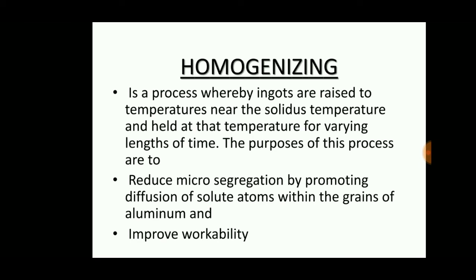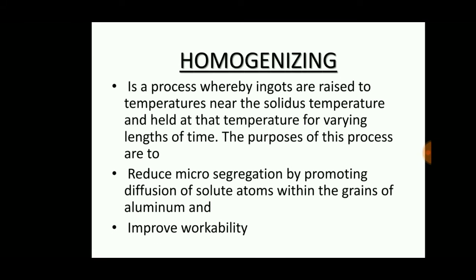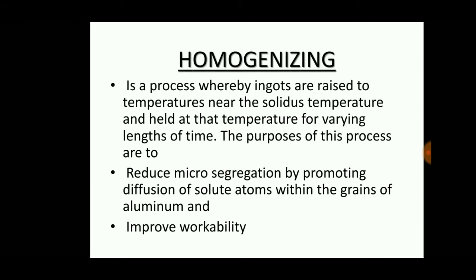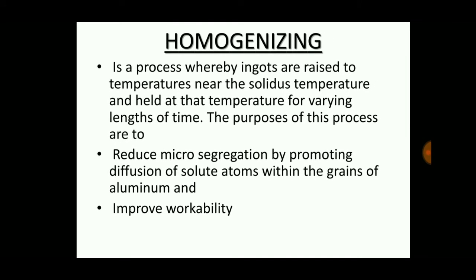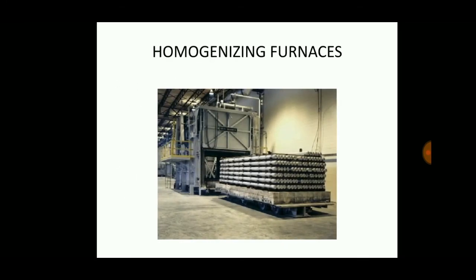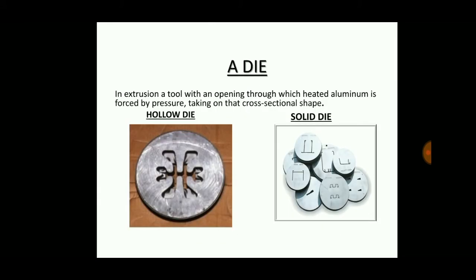In the homogenizing process, the ingots are raised to temperatures near the solidus temperature and held at that temperature for varying lengths of time, because properties change if we do not homogenize. This improves the workability of the shaft. The homogenizing furnace is where the shafts are placed and the temperature is raised and maintained.